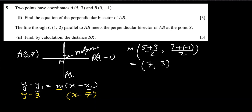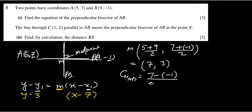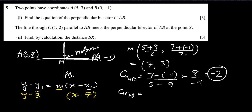We need at least two points on a line to find its gradient. The problem is we have just one point on this perpendicular bisector, but the good news is that we have two points on the main line AB. So let's find the gradient of AB. Gradient is y2 minus y1 over x2 minus x1. Taking y2 as 7, minus y1 which is -1, divided by x2 minus x1, which is 5 minus 9. That comes out to be 8 over -4, which is -2. The gradient of the perpendicular bisector will be the negative reciprocal of -2: negative makes it positive, and the reciprocal of 2 is one half.